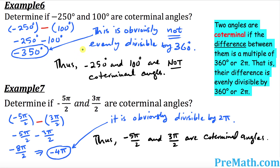Here are additional examples. For negative 250 degrees and 100 degrees, we subtract them and get negative 350 degrees, which is not evenly divisible by 360. Therefore, these two angles are not coterminal angles.